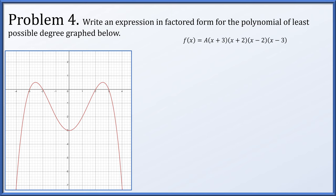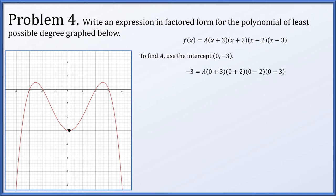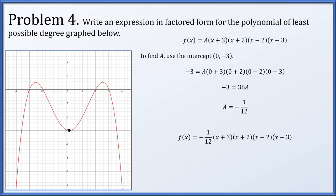To find the constant, we use the intercept visible on the graph at (0, negative 3). Setting x = 0, f(x) should equal negative 3. So negative 3 = a times (3)(2)(negative 2)(negative 3), which gives negative 3 = 36a, so a = negative 1 twelfth. Therefore f(x) = negative 1 twelfth times (x plus 3)(x plus 2)(x minus 2)(x minus 3) is the polynomial of smallest degree matching the given roots and intercept.